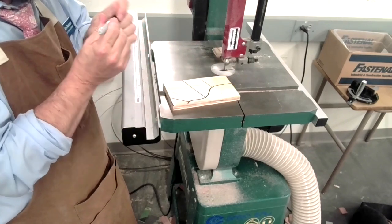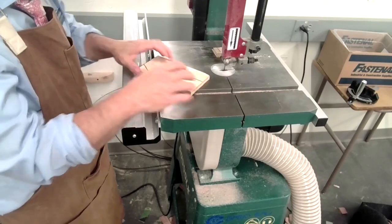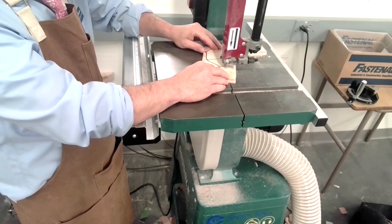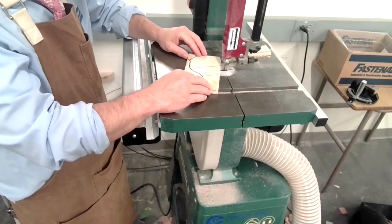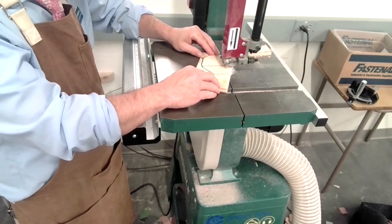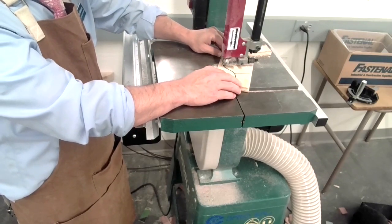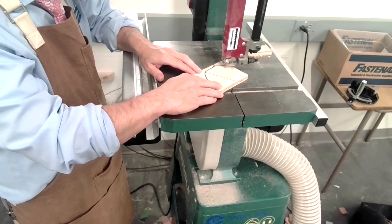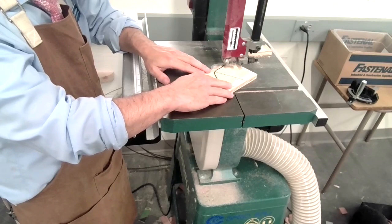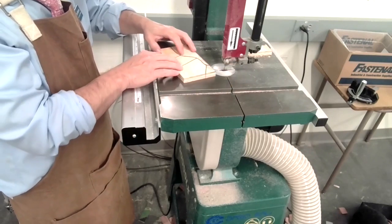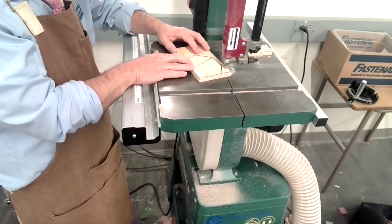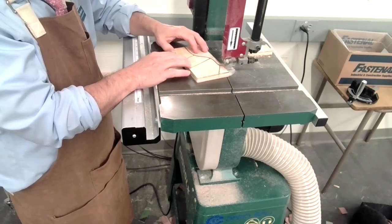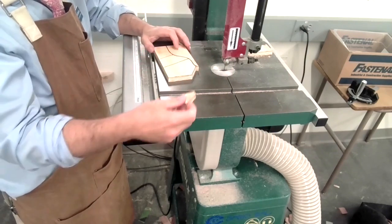And it doesn't matter that I'm a little off on these lines, since this is just my waste material. So I'm going to go just up to that line, then I cut my curve. So that piece comes off.